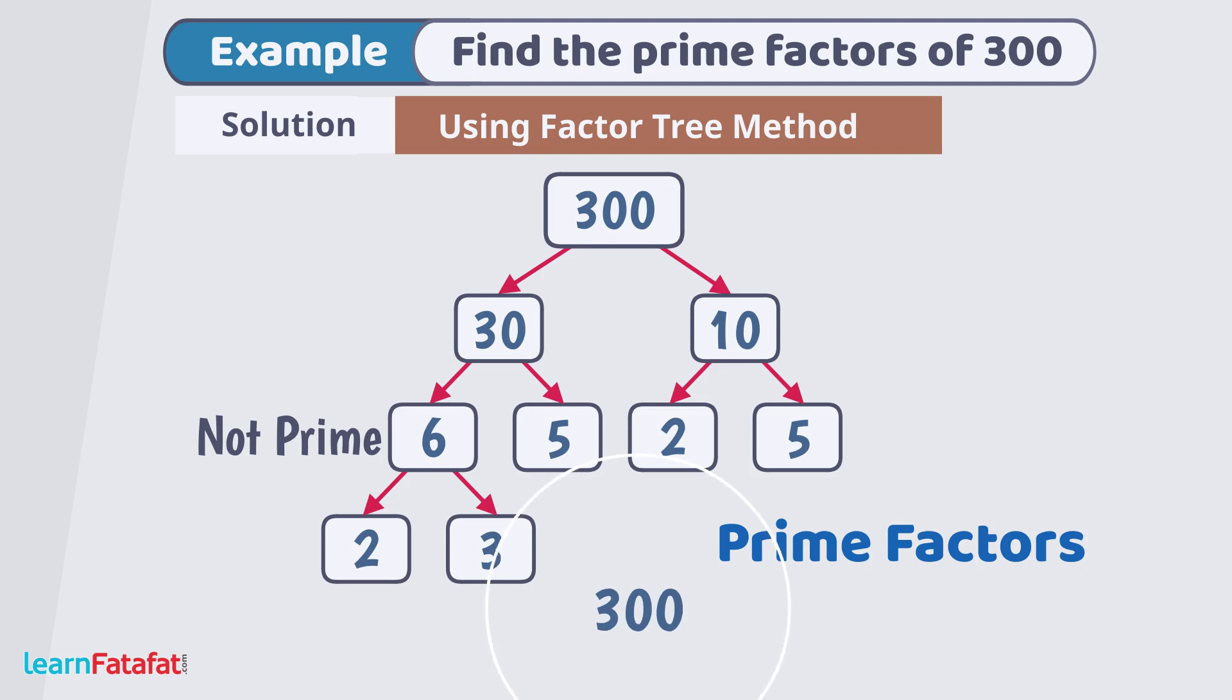So, prime factors of 300 are 2, 2, 3, 5, 5.